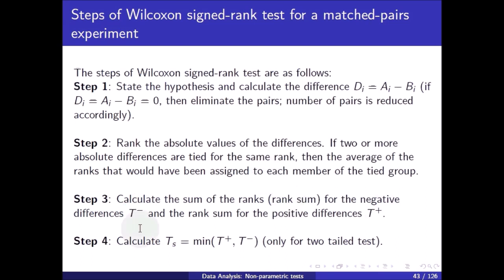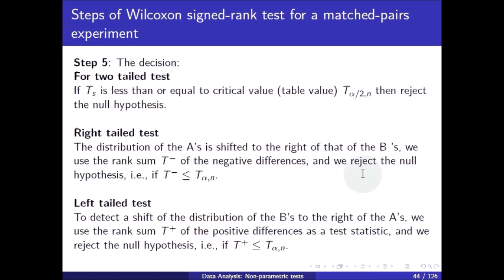Step 4: Calculate T_s equal to the minimum of T plus and T minus, for the two-tailed test. Step 5 decision: For the two-tailed test, if T_s is less than or equal to the critical value t_{alpha/2, n}, then reject the null hypothesis.